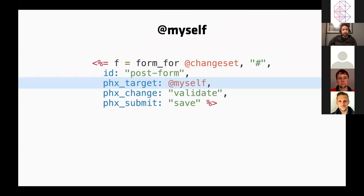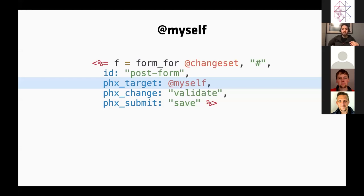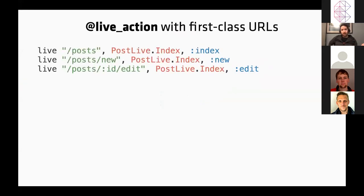A small convenience feature: if you're defining a component and want it to handle an event itself rather than passing it to the parent LiveView, you previously had to define a DOM id and target it. Now you can use the `myself` assign — just say `phx-target={@myself}` and the event goes to the component. This has been largely welcomed by folks using a lot of components.